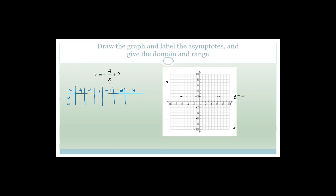You don't have to use factors of this number — you could use any numbers you want. When x is four: minus four divided by four is minus one, minus one plus two is one. If x is two: minus two plus two is zero. When x is one: minus four plus two is minus two. When x is minus one: four plus two is six. When x is minus two: two plus two is four. When x is minus four: minus four divided by minus four is one, plus two is three.